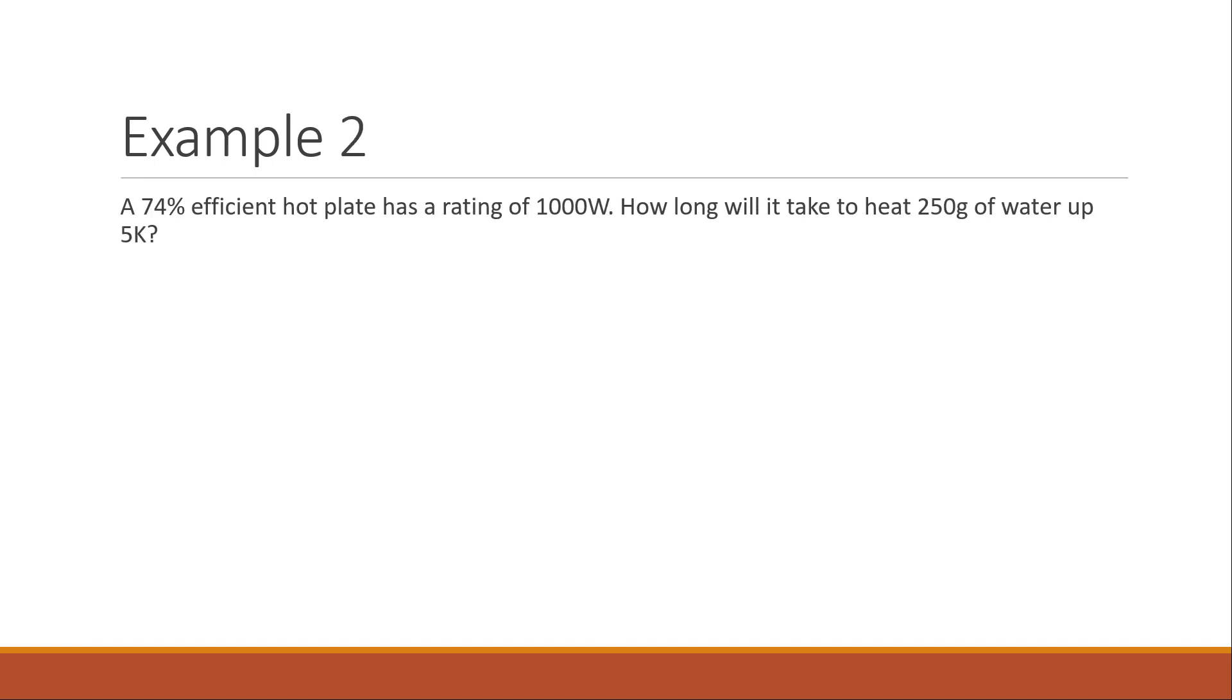Let's try another one. A 74% efficient hot plate has a rating of 1000 watts. How long will it take to heat 250 grams of water up 5 Kelvin? So we're heating one cup of water 5 Kelvin, and the hot plate of 1000 watts is pretty standard. Thermal energy is the thing that's changing. So that's going to be my output, change in thermal energy. And since it's 1000 watts, I'm using my power formula again. So here we go. My efficiency is power output over power input.